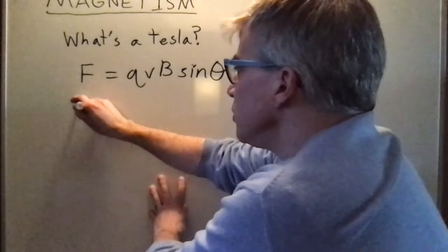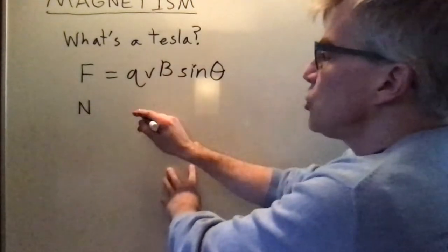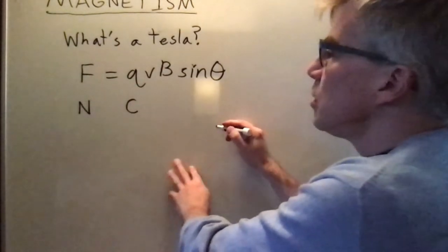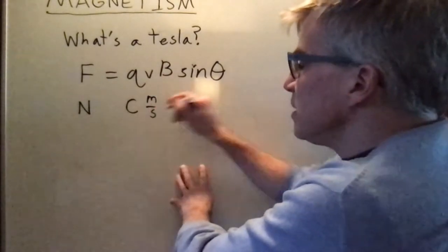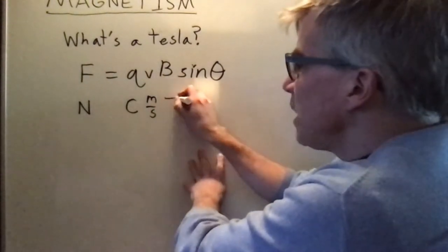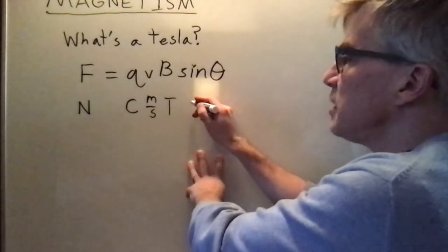Now we know that force is in newtons, we know that charge is in coulombs, we know velocity is in meters per second, and B we're saying is in teslas, and sine theta doesn't have any units.